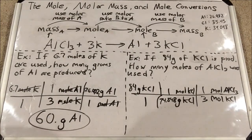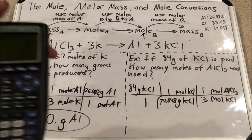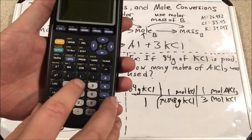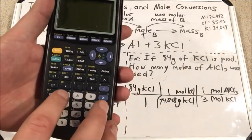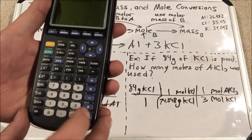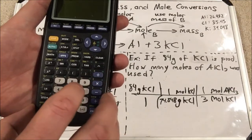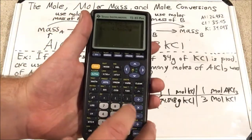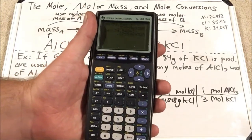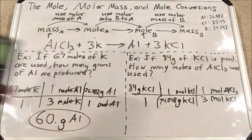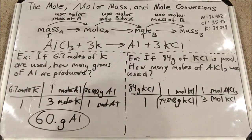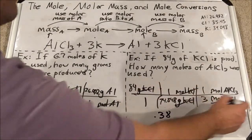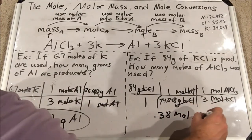Now I divide twice. On most Texas Instruments calculators, I can do 84 divided by 74.548, then divide again by 3 — or do 84 divided by (74.548 times 3) in parentheses. These give the same result: 0.375596. With two significant figures from my original measurement, that rounds to 0.38 moles of AlCl3.